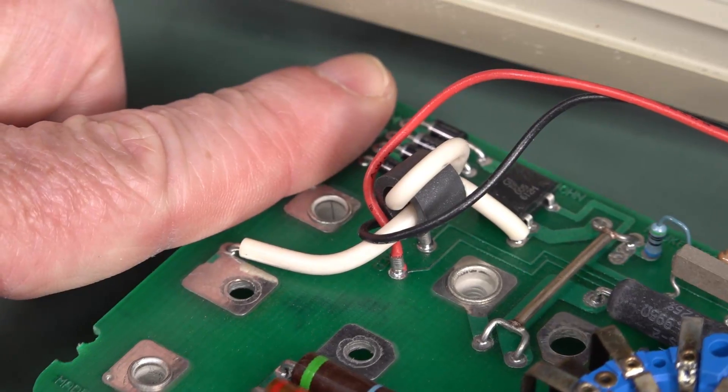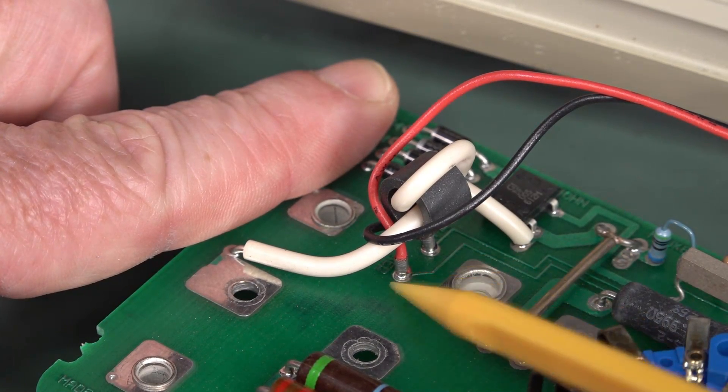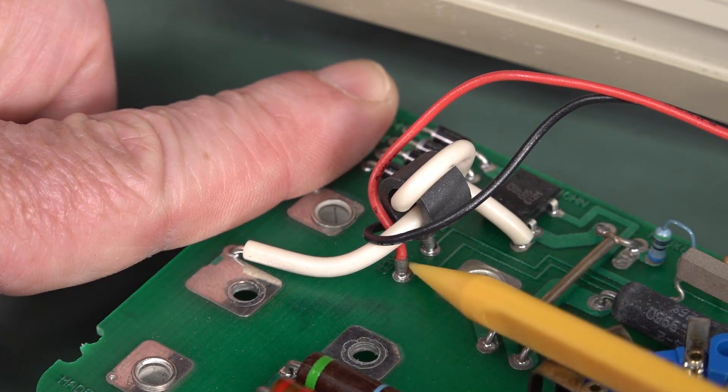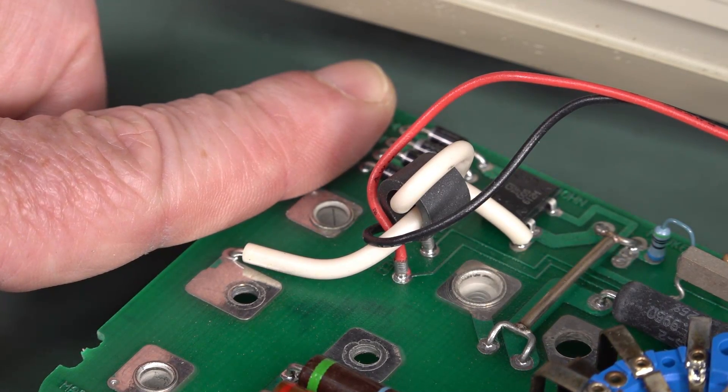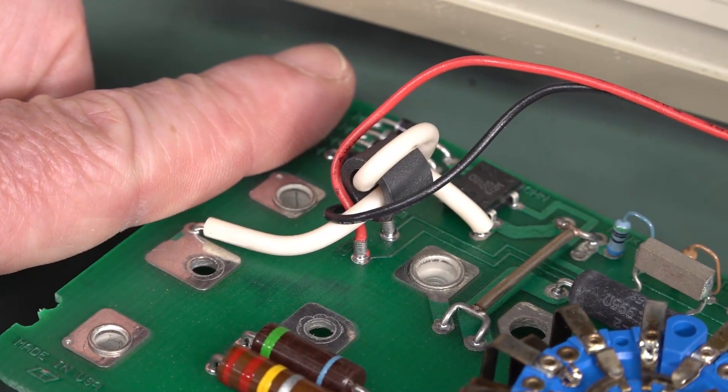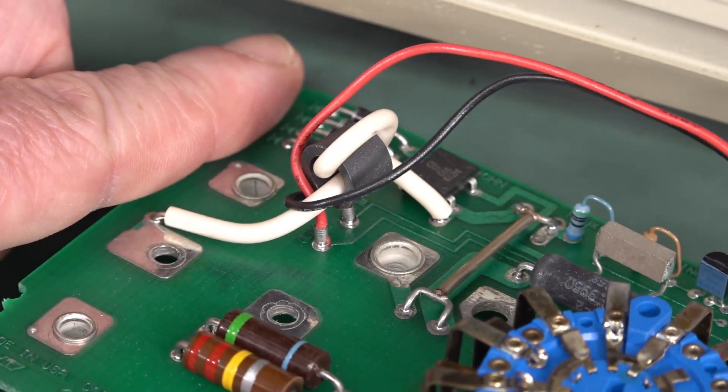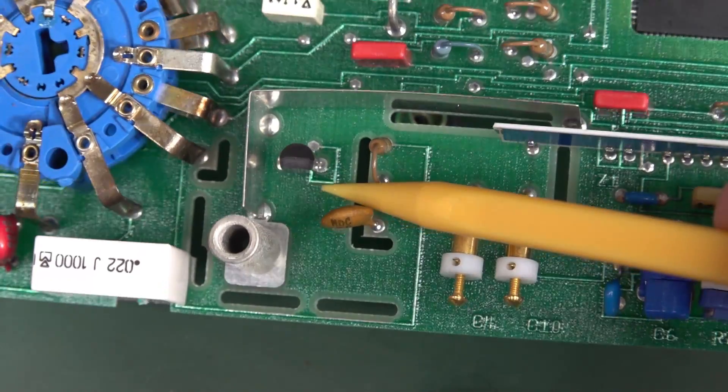Nice. I was a little bit concerned about the strain relief on the battery snaps there. But there you go. They've got little ferrules going into the board there like that. So that's okay. But I would have liked to have seen a better battery solution. But hey, even though the Fluke 80 series has still got the same battery snap solution.